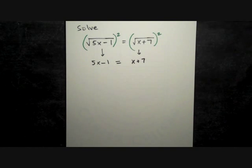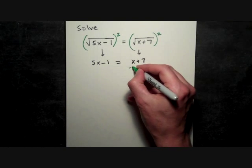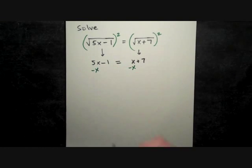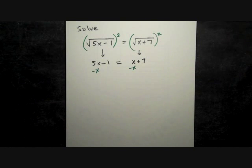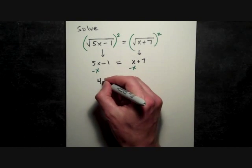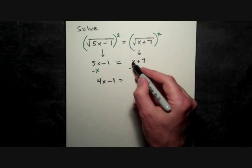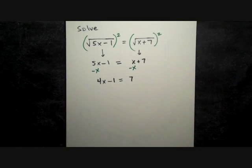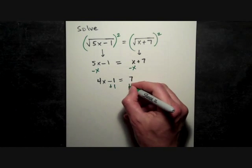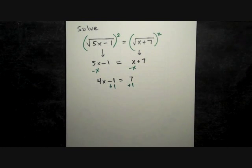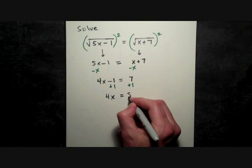And this is a nice linear equation that we get. There's no x squareds, there's just x. So we'll combine our x's on the left side of the equation. That gives us 4x - 1 on the left, 0 + 7 on the right. Combine our constants and we get 4x = 8.